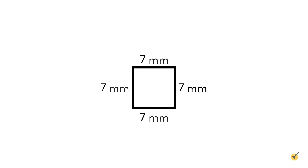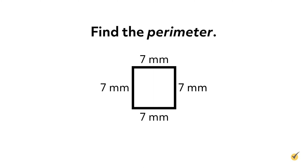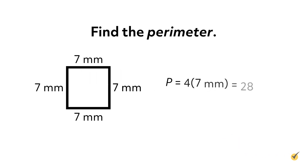Here's an example for you to try. Suppose you have a small square that measures 7 millimeters on each side. What is its perimeter? Be careful to state the units of your answer. Pause the video now while you work out the solution, then press play to compare your answer to mine. The perimeter of the small square is 4 times the side length of 7 millimeters, which is 28 millimeters.